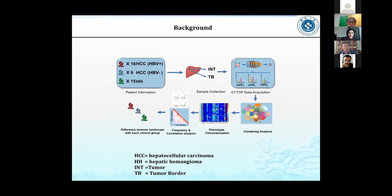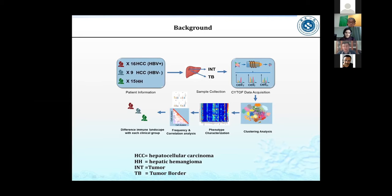To address these issues, we collected tumor and tumor border samples from 25 HCC patients, including 16 HPV-positive HCC and 9 HPV-negative HCC patients, and also 15 hepatic hemangioma patient samples. We used these samples to isolate single cells and acquire data from mass cytometry to analyze the characterization of immune cell components, different immune subset frequencies, and correlations of each subset. Finally, we will identify the signature of the immune landscape in different patient groups.